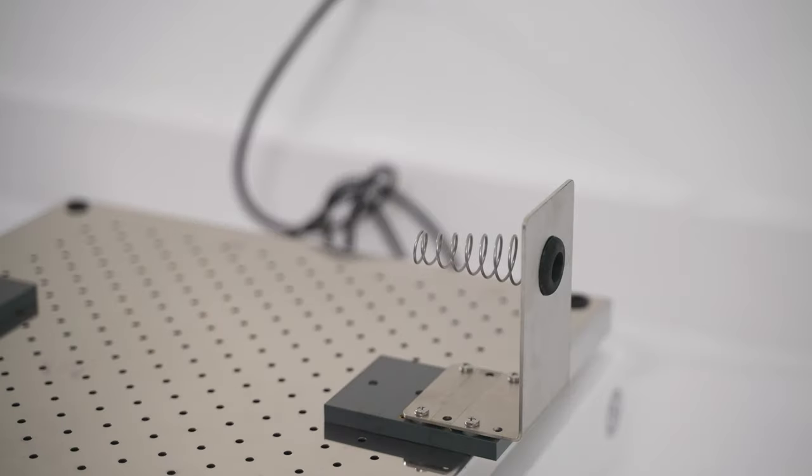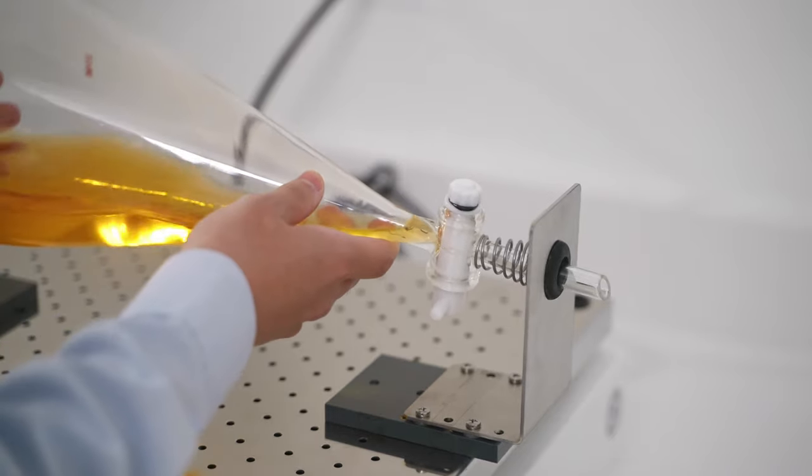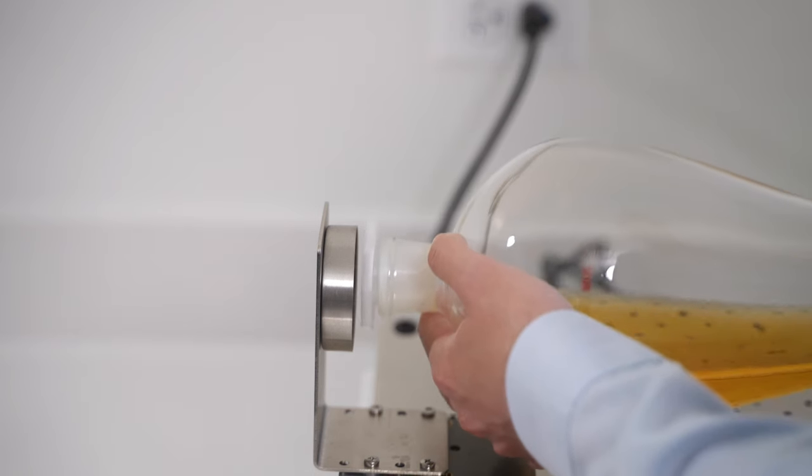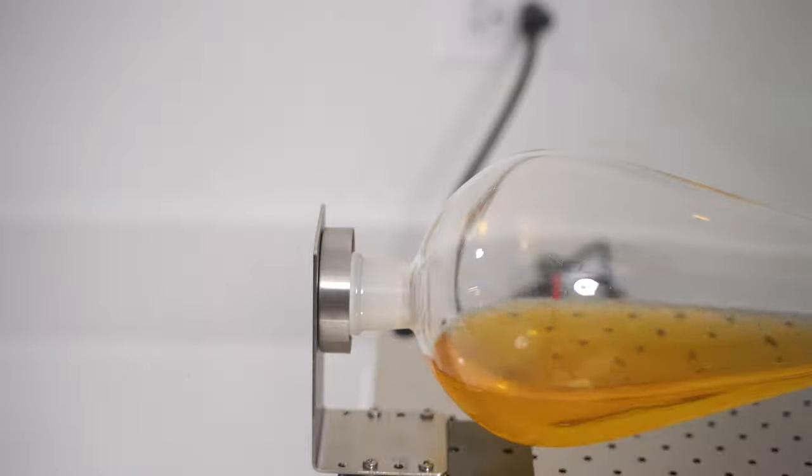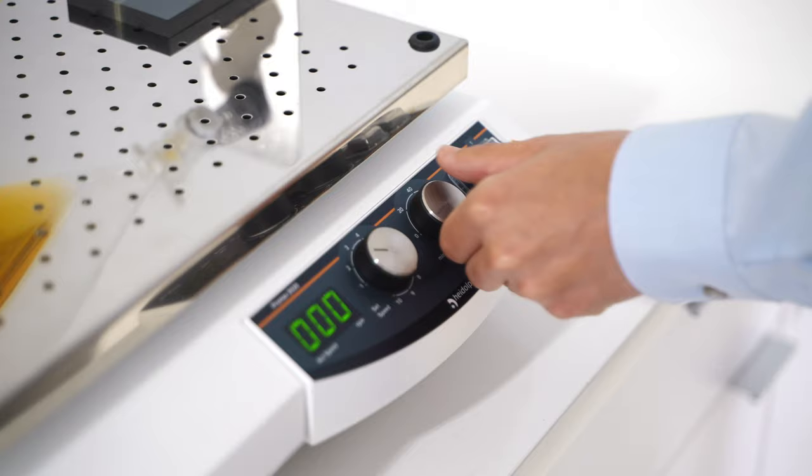Once the two clamps have been fitted at the correct locations, the separatory funnel can be fitted by pushing the stopcock end of the separatory funnel into the spring. Once pushed in, the stopper end of the separatory funnel can be placed securely into the other clamp. From there, you just need to put in the correct speed settings and time settings.